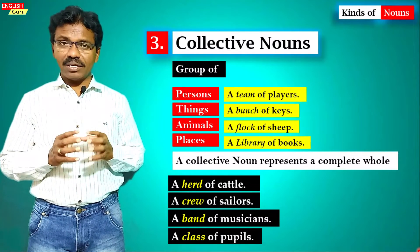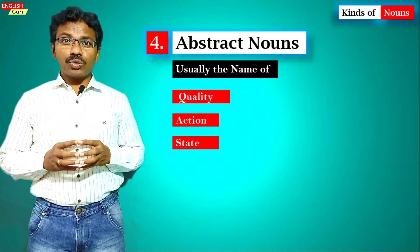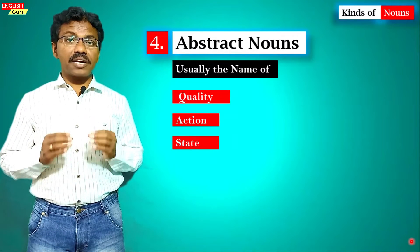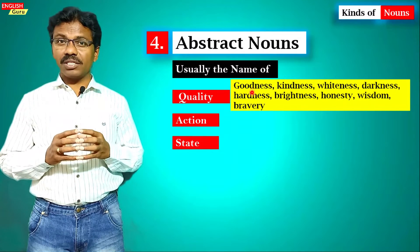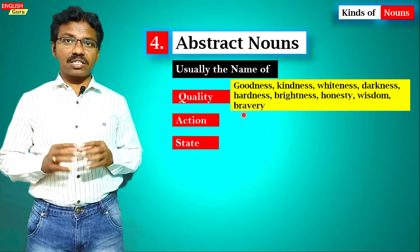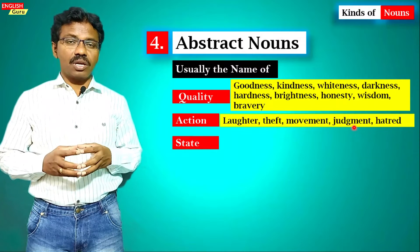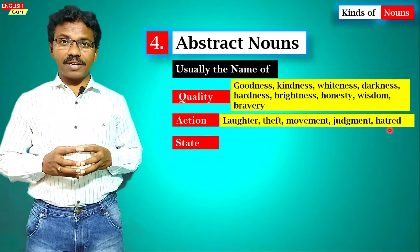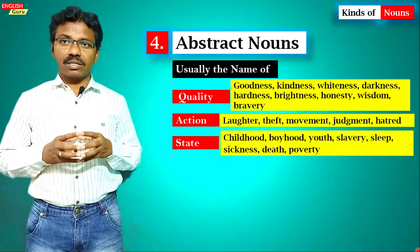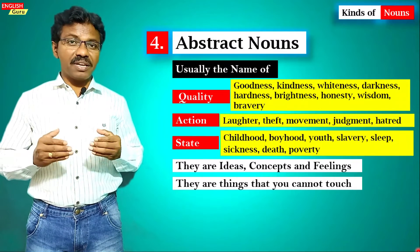The fourth kind is abstract nouns — usually the names of quality, action, and state. They are ideas, concepts, and feelings — things you cannot touch, only feel. Qualities: goodness, kindness, whiteness, darkness, bravery, hardness, honesty. Actions: laughter, theft, movement, judgment, hatred. States: childhood, boyhood, youth, slavery, sickness, death, poverty. These are things we can feel but cannot touch.